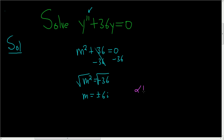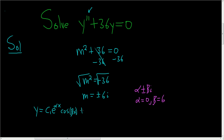We have roots of the form alpha plus or minus beta i. In this case, alpha is equal to 0 and beta is equal to 6. So the solution has the form y equals c1 e to the alpha x cosine beta x plus c2 e to the alpha x sine of beta x.